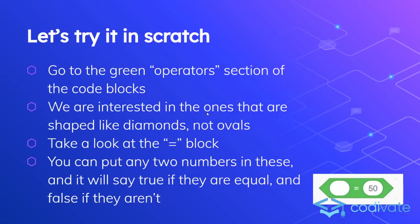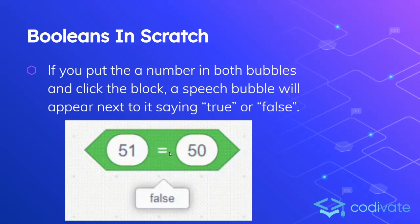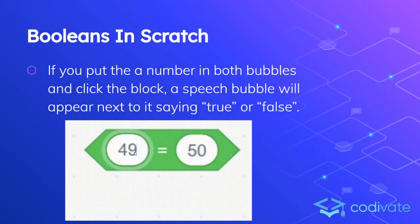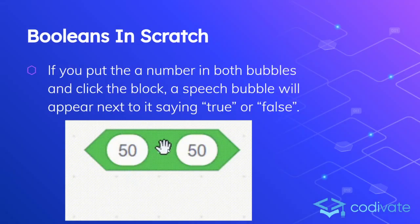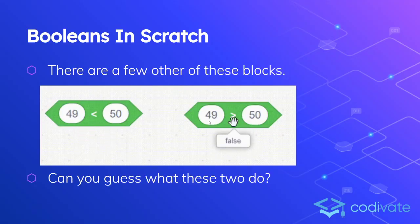In Scratch, Booleans look like these diamond-shaped blocks, where you have two slots for numbers and an operator in the middle. You can have an equal sign, or a less than or greater than sign. When you click on these, they tell you whether they're saying false or true. They'll say true when the statement inside is true, and false otherwise. For example, 50 equals 50 is true, but 49 equals 50 is false. Similarly, less than and greater than do basically the same things.